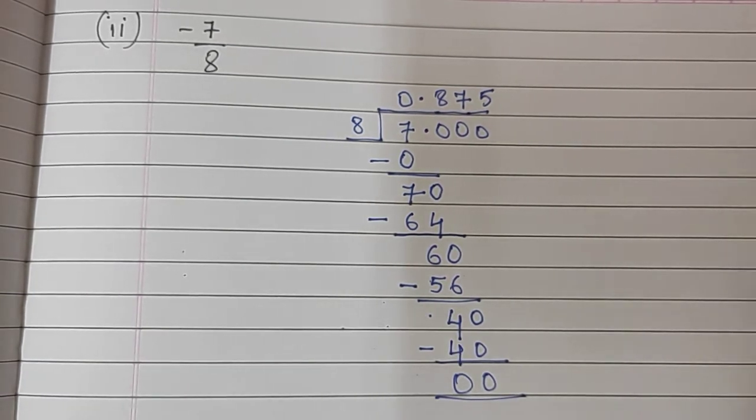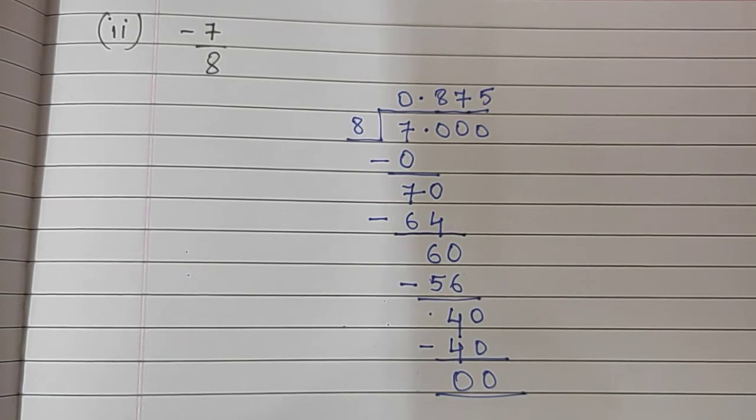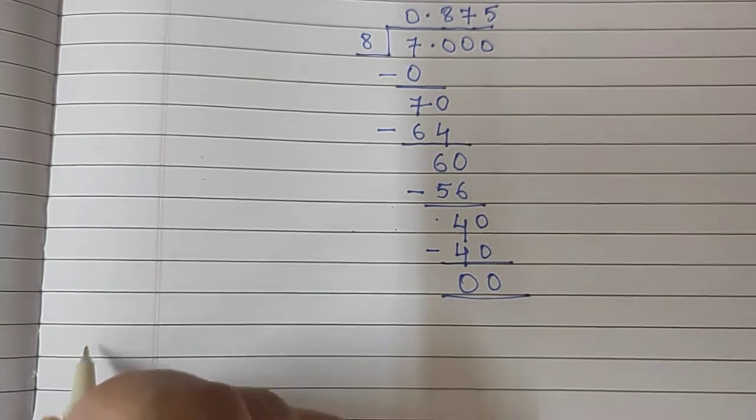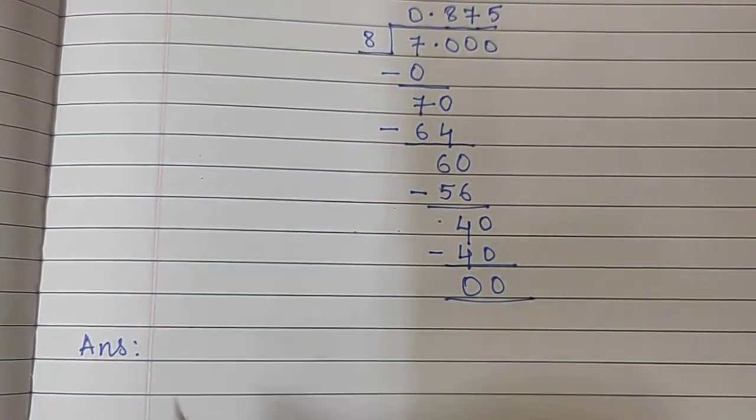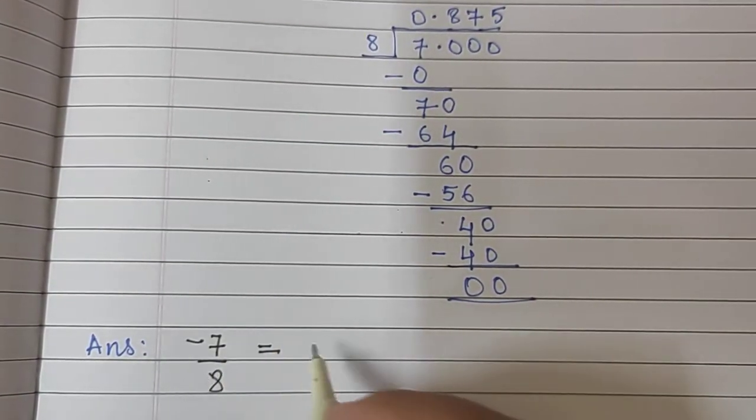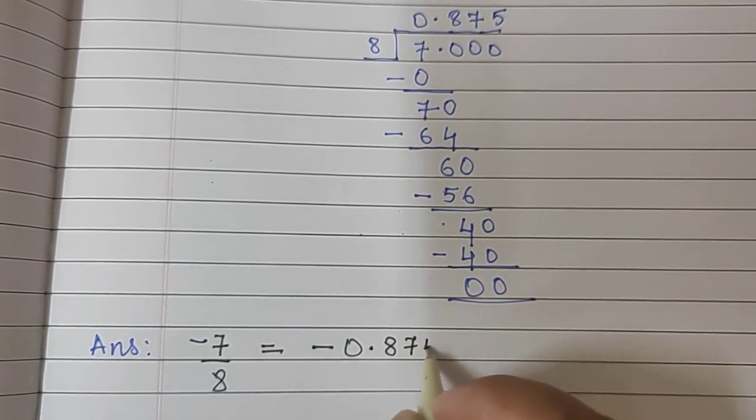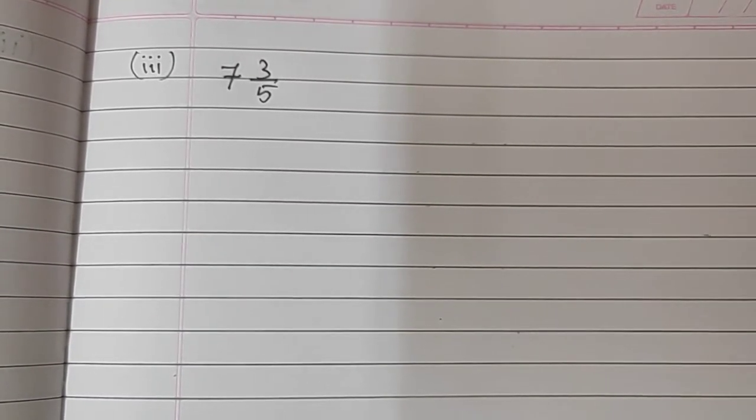So, my answer will be 0.875. I will write in the answer. It was minus 7 upon 8 will be equal to, don't forget to put the minus sign. You will write minus 0.875. Moving to the next sum. This sum is 7, 3 upon 5.